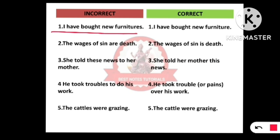Our first line is: 'I have bought new furnitures.' There is an error in 'furnitures' because we say 'furniture,' not 'furnitures.' Furniture includes all the things that are made of wood. So the corrected sentence is: 'I have bought new furniture.'